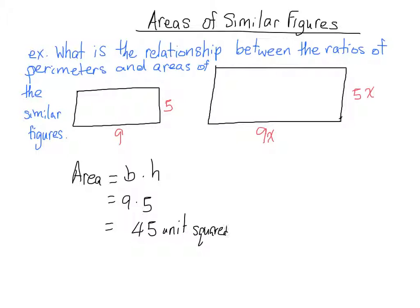And then the second figure, the area is base times height, it's still a rectangle, and so it's 9x times 5x. So in this case, the area is 45x squared units squared.